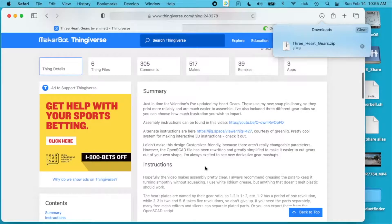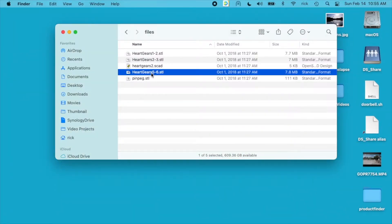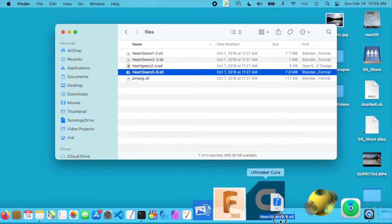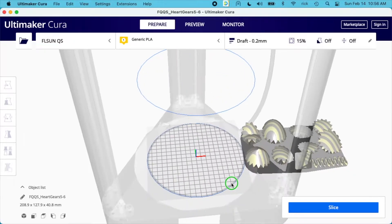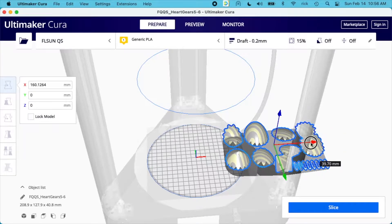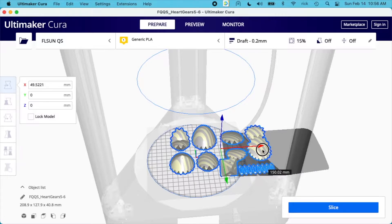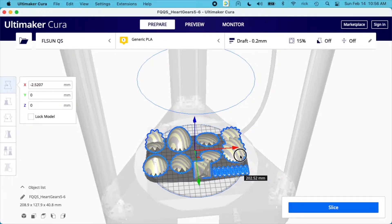It doesn't give a lot of parameters on what you should set up to print this. I'll open up the model, I'll take heart gears 5-6 and drag that into Cura. By default this is too large to fit on the build plate. I'm just going to shrink it down. I'll select this, I'll make sure I have the move tool on the left, and I'll click on the red arrow and slide it over. I'm going to line up that green line and arrow with the center of the build plate so I know it's centered.